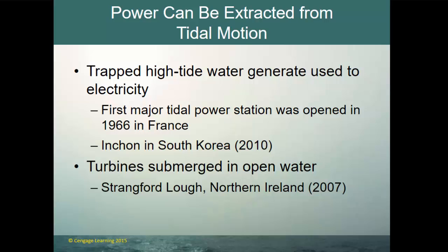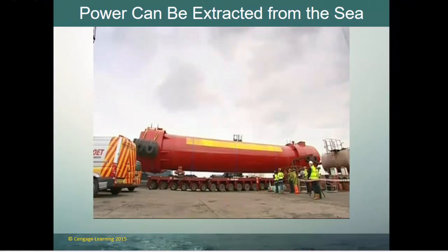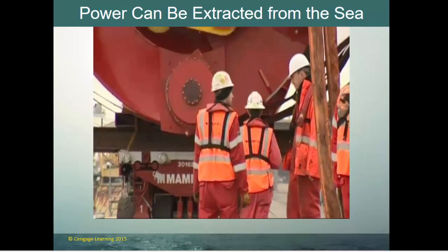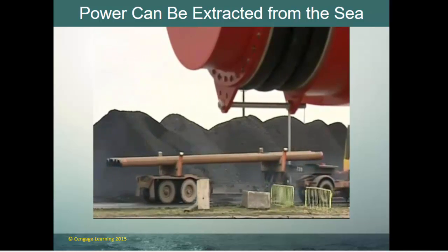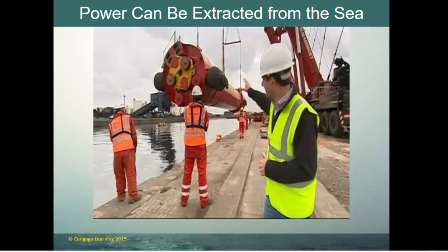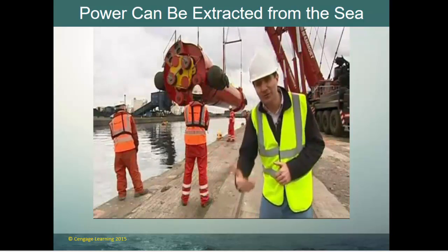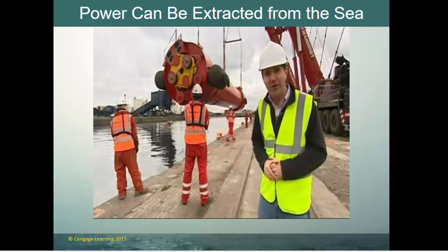Trapped high-tide water can be used to generate electricity. The tide comes in and is pushed up slope, and the force of gravity pulls it back down as the tide recedes — we can use that force to create electricity. The first major tidal power station opened in 1966, and we have also seen them in South Korea and Northern Ireland, where submerged turbines are driven by tidal flow. A new wave power machine the size of a submarine is being deployed near Edinburgh, with cylinders that move with each wave, driving hydraulic pumps that channel energy into a generator to produce electricity.